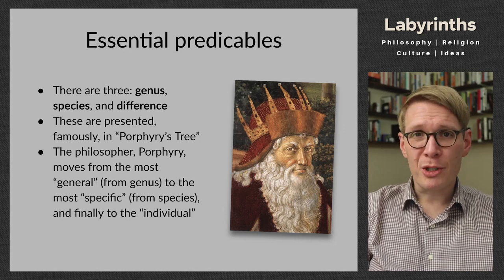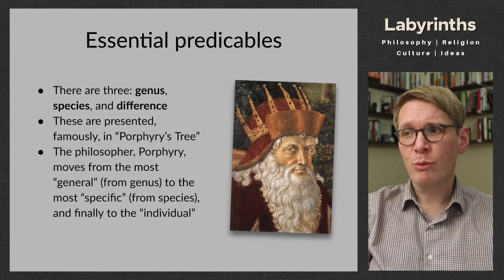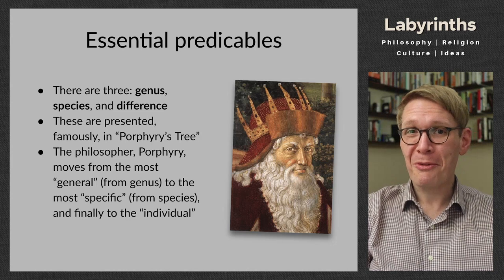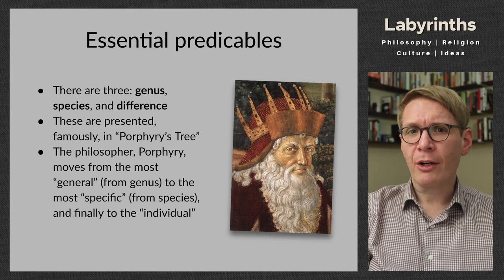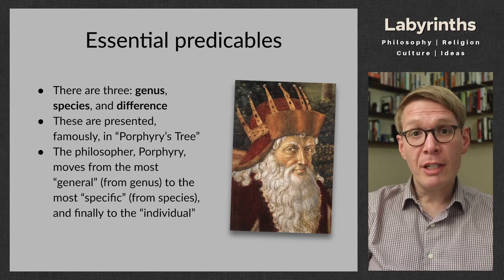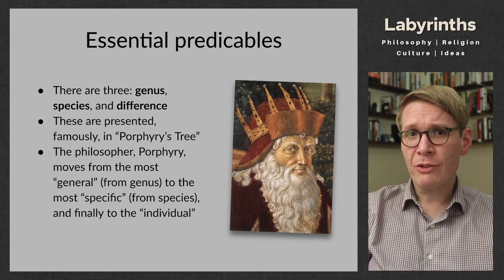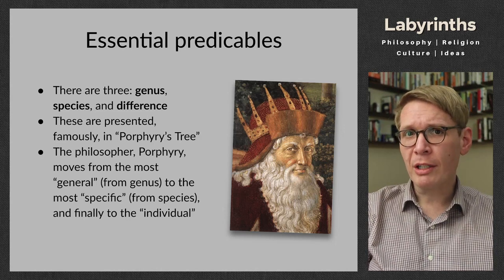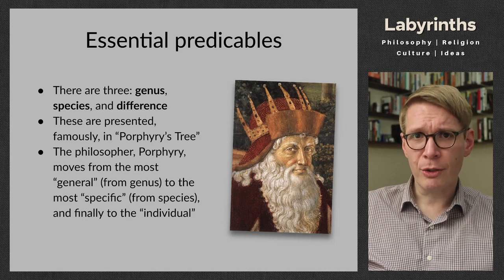Porphyry's Tree presents this movement from the most general — and that's where we get our word 'general' from, genus — to the most specific — and that's where we get our word 'specific' from, species. At the very bottom of Porphyry's Tree we get individuals, and we'll see in our next lecture on definition that individuals cannot be defined in the same way that genus or species can be defined. There is a certain singularity about individuals that probably has important ethical implications.